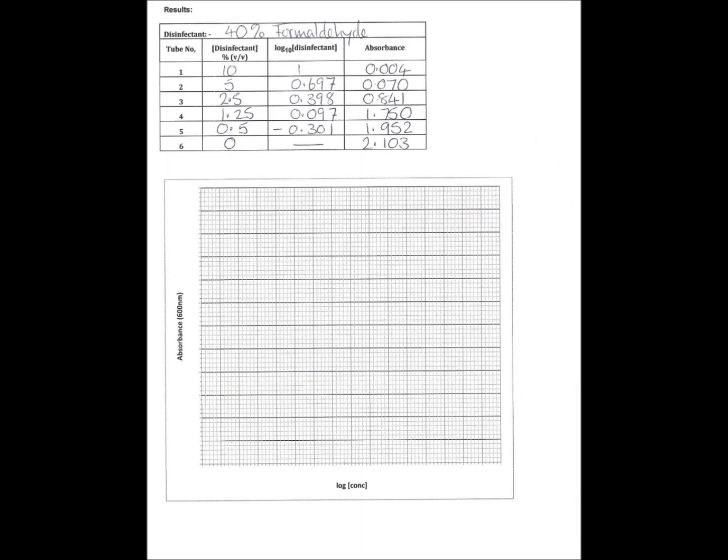If you put zero into your calculator and ask it for log to the base 10, it's going to give you an error because there is no log value for zero. However, the absorbance value 2.1 is very important, and so we've recorded that in the table. I've put a dash under the log to the 10 column just to remind me to make sure that we don't plot it against the zero.